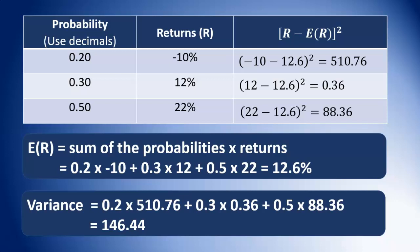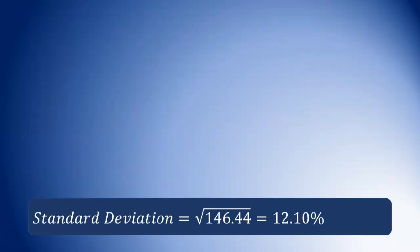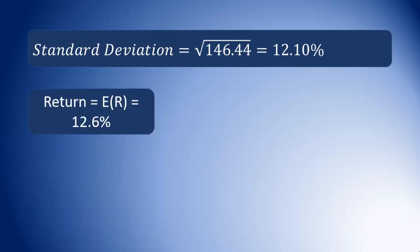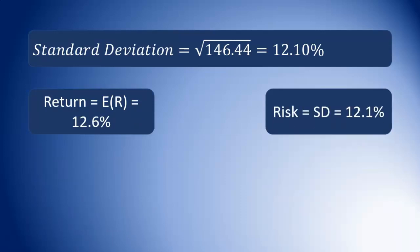Now we have our expected return and our variance. The standard deviation is just the square root of the variance — the square root of 146.44 — which gives us 12.1%. So the return is 12.6% and the risk, which is the standard deviation, is 12.1%.